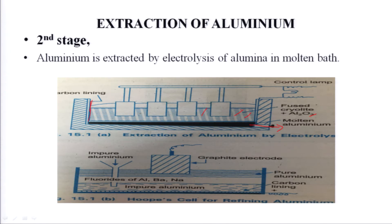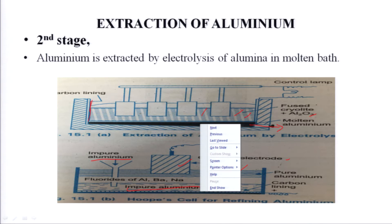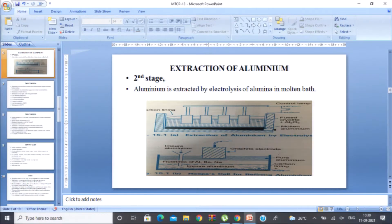Now come to the second method. These are the graphite electrodes. This is the solution which has impurities — this is the impure aluminium. After electrolysis, this portion will be the pure aluminium. At the bottom of this tank there is a carbon lining. So ultimately, we will get pure aluminium in the second type, that is called the Hoops shell for aluminium extraction.